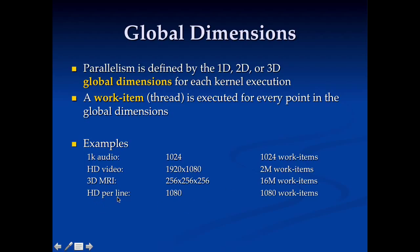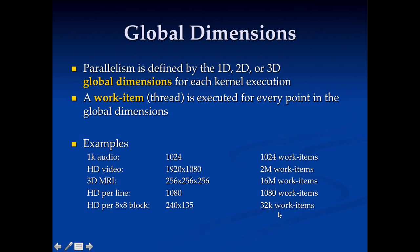Maybe I want to process high-definition video differently — perhaps one thread per line, giving global dimensions of 1080 and 1,080 work items. Or maybe I want to process in 8x8 blocks, giving 240 by 135 as my global dimensions, which is only 32,000 work items. The key idea is you choose your global dimensions in order to express the parallelism in the application you're writing.